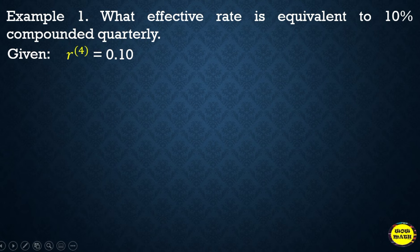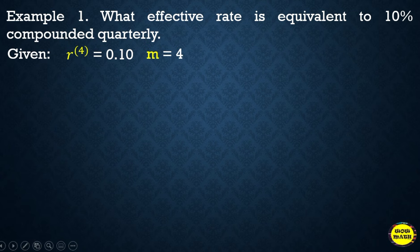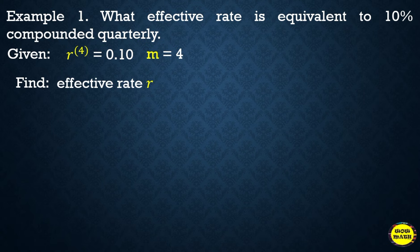The rate for compounded quarterly is 10%, which we convert to decimal: 0.10. The frequency of conversion is 4 because it is quarterly. We need to find the effective rate r, which is the rate compounded annually.